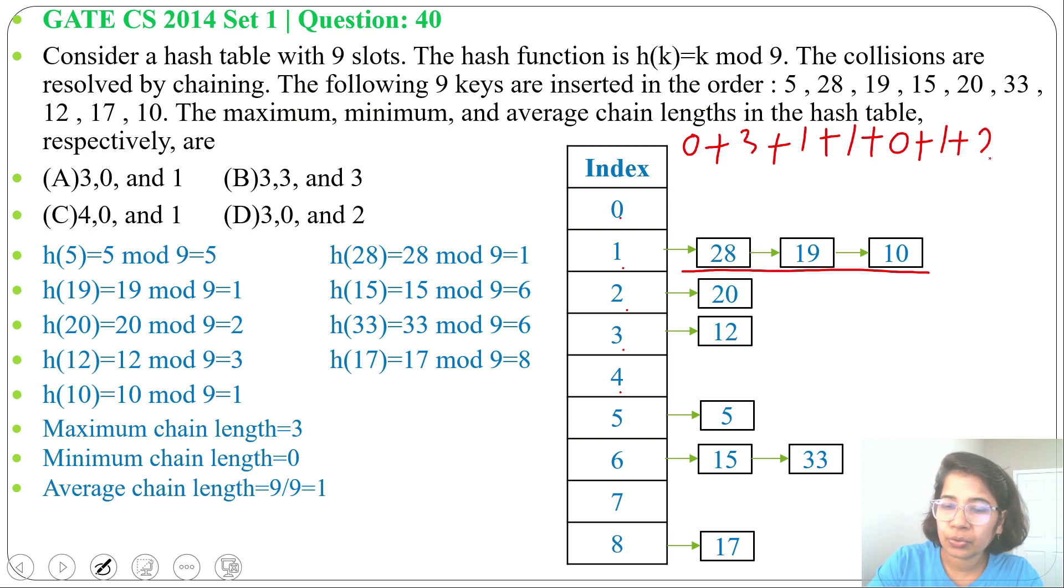For 6, length is 2. For 7, it's 0. For 8, it's 1. So add all this, divide by 9. Or simply we have 9 keys, 9 slots, 9 divided by 9, it's 1. Now check the option.